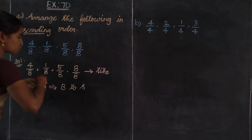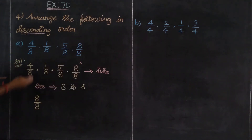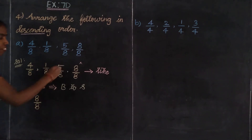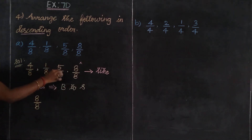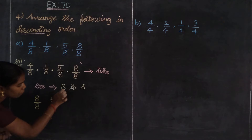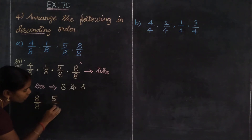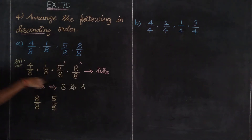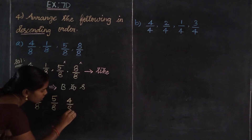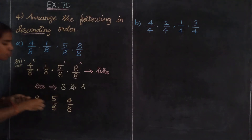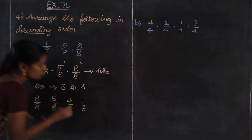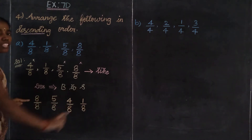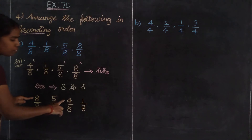Next highest value among 4, 5, and 1 — the numerator to consider — 5 is the highest another value. So 5 divided by 8 is the second. Then the next highest is 4, so 4 divided by 8 is third. Only one fraction remains: 1 by 8. It is the smallest value. Considering only the numerators: 8, 5, 4, 1.